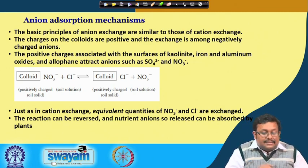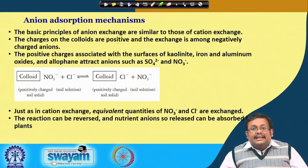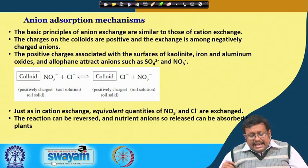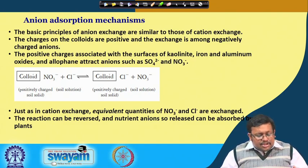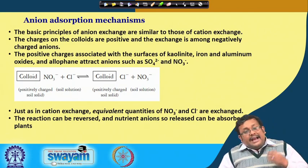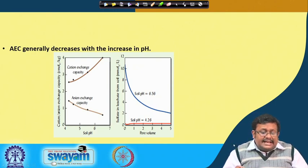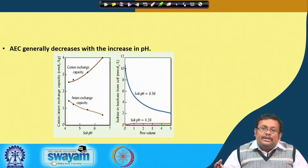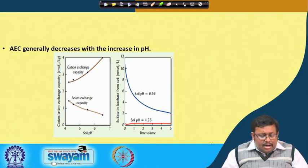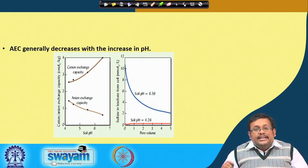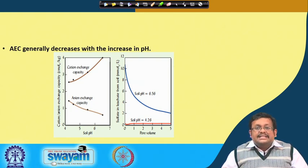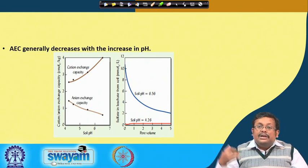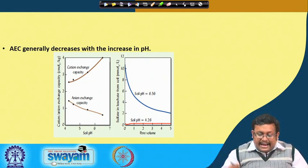Nitrate is first adsorbed to soil colloids and then replaced by another anion — chloride — in a process similar to cation exchange, where equivalent quantities of nitrate and chloride are exchanged. The reaction can be reversed and nutrient anions released can be absorbed by plants. AEC generally decreases with increased pH. When pH increases, negative charge develops due to pH-dependent charge, which means anion exchange capacity decreases and cation exchange capacity increases — repelling anions and attracting more cations.